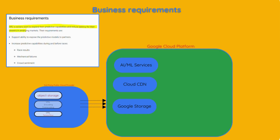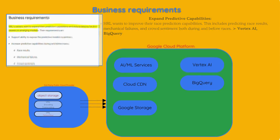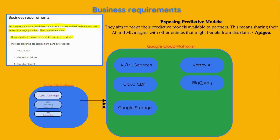HRL's owners want to expand their predictive capabilities and reduce latency for their viewers in emerging markets. This includes predicting race results, mechanical failures, and crowd sentiment both during and before races. This is possible with Google Vertex AI — formerly known as AI Platform — which will be used to build and deploy machine learning models for predictions, and also with BigQuery ML for real-time predictions. For exposing predictive models to partners, Apigee is the primary answer, as it's a full-featured product designed for API consumption across teams, partners, organizations, and ecosystems per Google Cloud documentation.